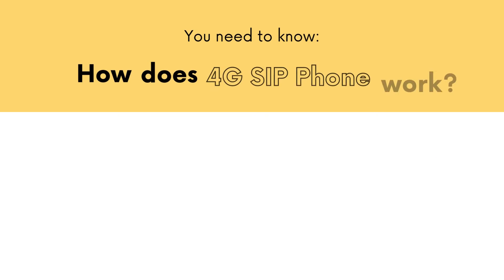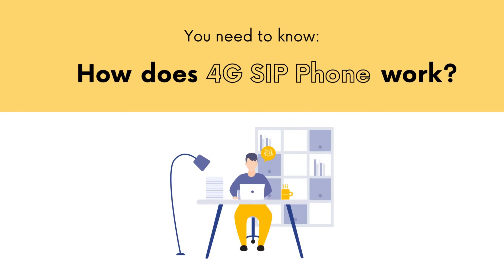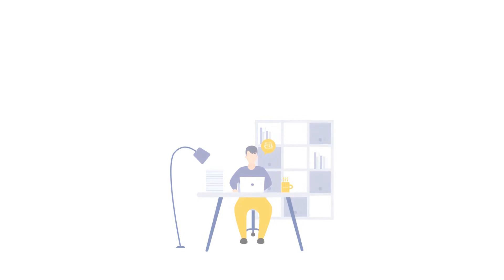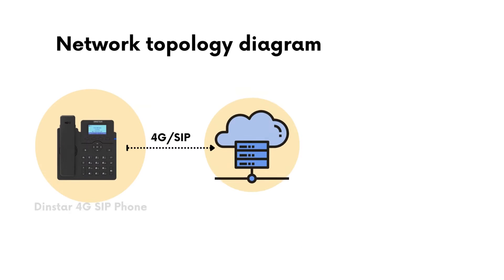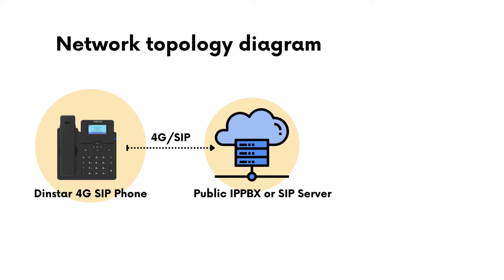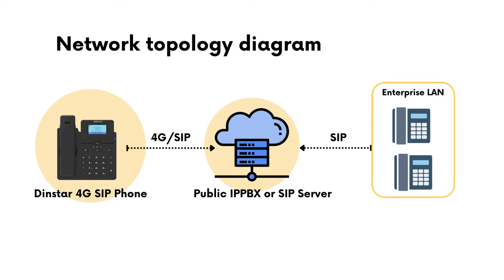In this part, you will know how the 4G SIP phone works. 4G SIP phone can connect to any public RPPBX or SIP servers. This enables conversations with other extensions. In this video, the 4G SIP phone will communicate with the extensions on the main network.